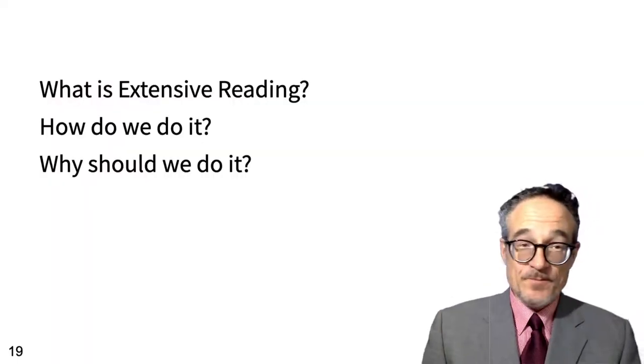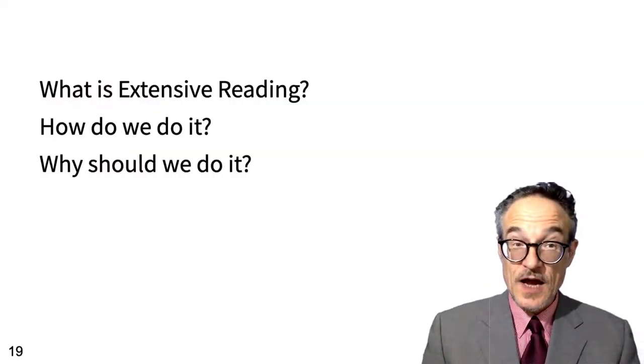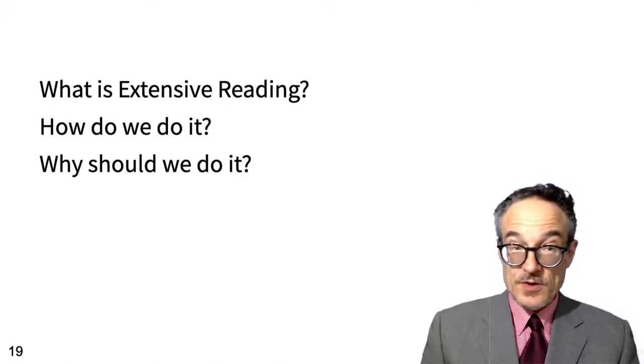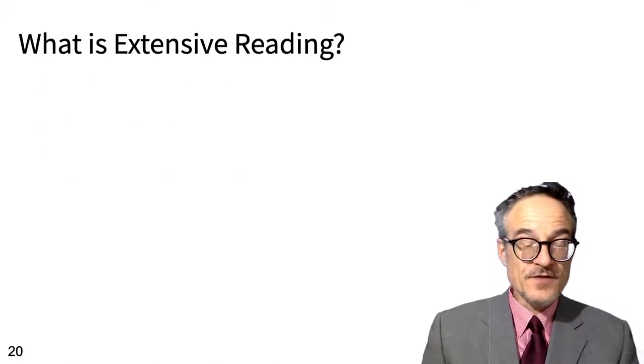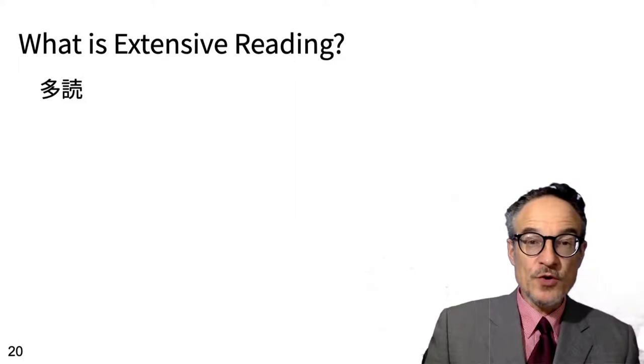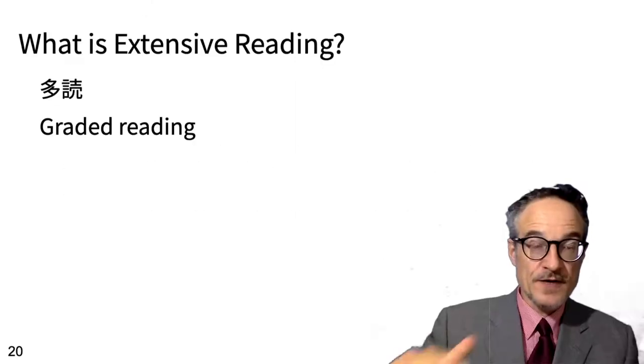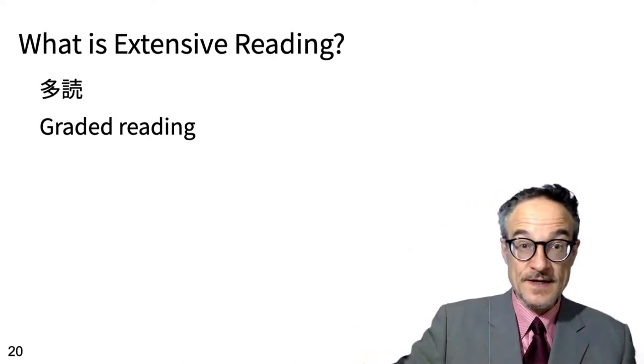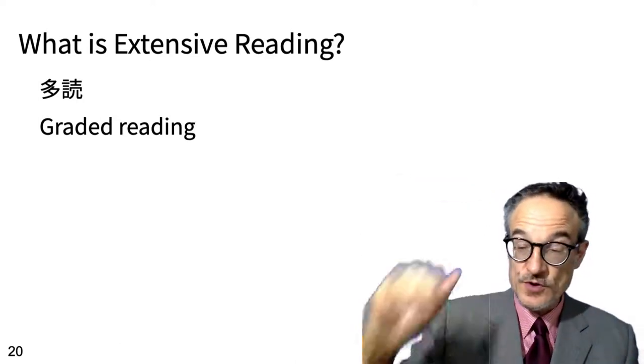So what is extensive reading? How should we do it? How do we do it? Why should we do it? So extensive reading is called tadoku. That's a direct Japanese translation. It can be called graded reading. The idea is there are different grades, different levels of books, books from very easy up to more difficult.